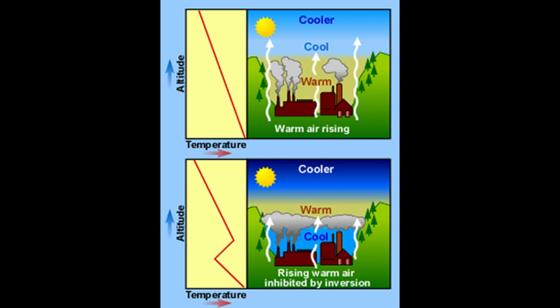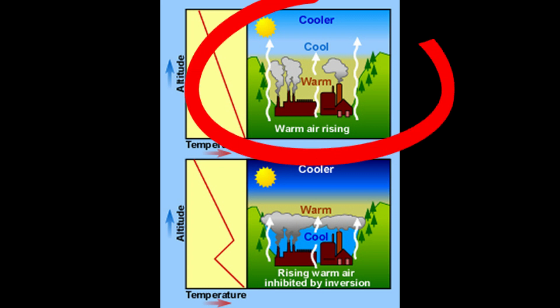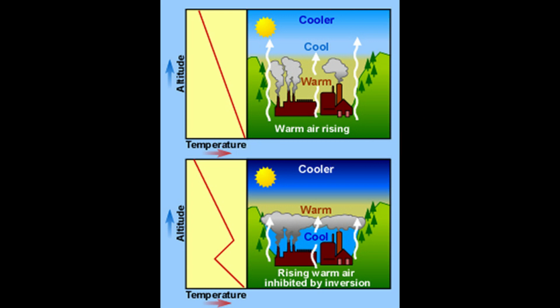This figure shows what an inversion looks like compared to normal atmospheric conditions. The normal atmospheric conditions are highlighted in the top of this figure, where you have cooler air layered over cool air layered over warm air. This warm air, as it rises, will mix and dissipate smoke, vapors, or any fine particles into the upper atmosphere. The bottom figure shows what an inversion looks like, where you have a layer of warm air trapped in between two layers of cool air.